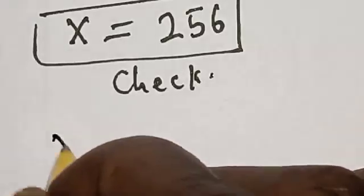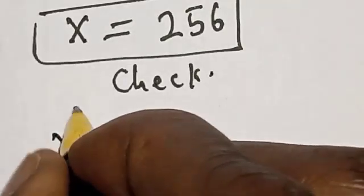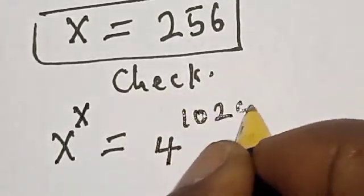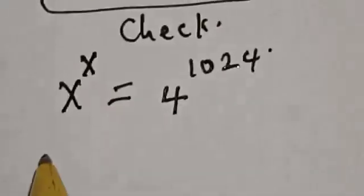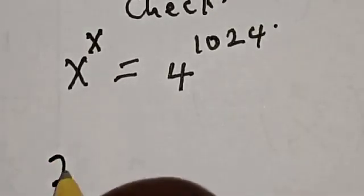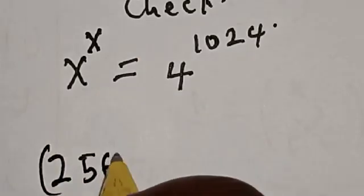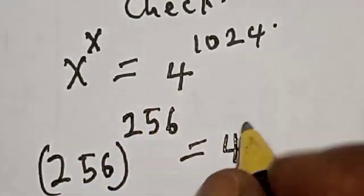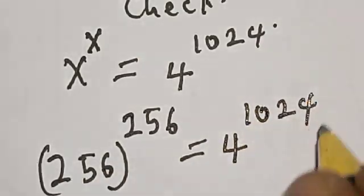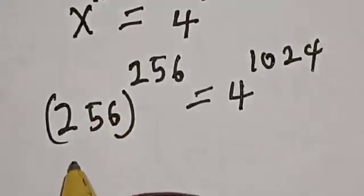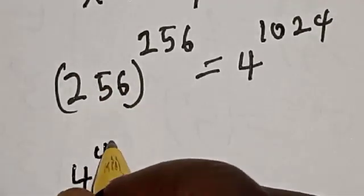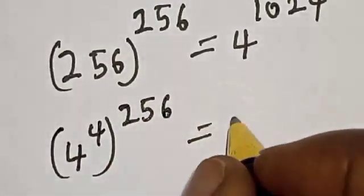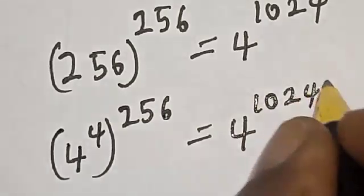We have the given question: s raised to the power s is equal to 4 raised to the power 1024. With s equal to 256: 256 raised to the power 256 equals 4 raised to the power 1024. We can also write this as 4 raised to the power 4, raised to the power 4, raised to the power 4, raised to the power 256, which equals 4 raised to the power 1024.